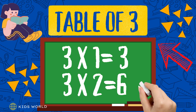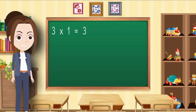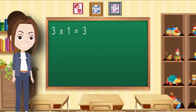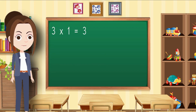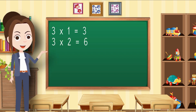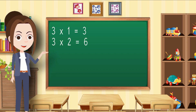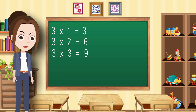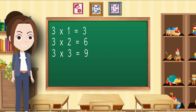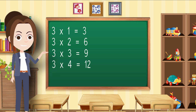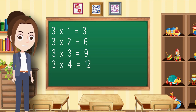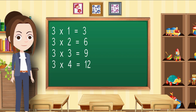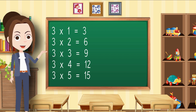Table of 3. 3 1s are 3, 3 2s are 6, 3 3s are 9, 3 4s are 12, 3 5s are 15,